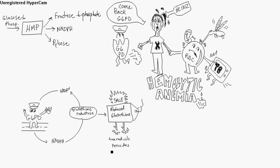In the absence of reduced glutathione, the hemoglobins — which normally have a 2+ iron — end up with a 3+ iron. That's no longer called hemoglobin; it's called methemoglobin. These are no longer functional, and because the iron is now 3+, they begin to clump together and precipitate as Heinz bodies. That's why in G6PD deficiency you have Heinz bodies.